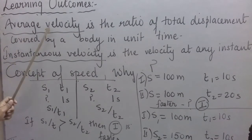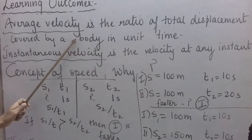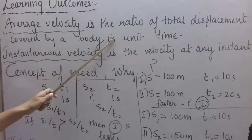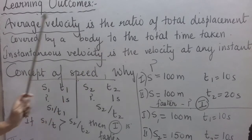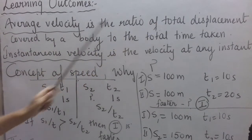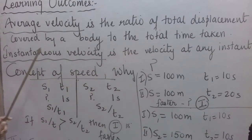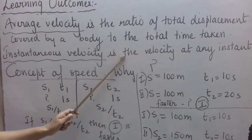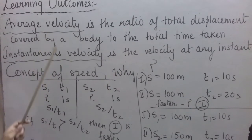Average velocity is the ratio of total displacement covered by a body to the total time taken by it. Instantaneous velocity of a body is its velocity at any instant. The definitions are very simple and self-explanatory.